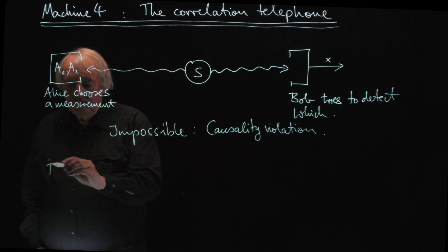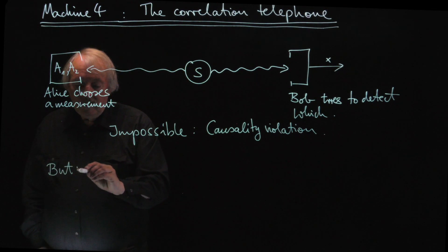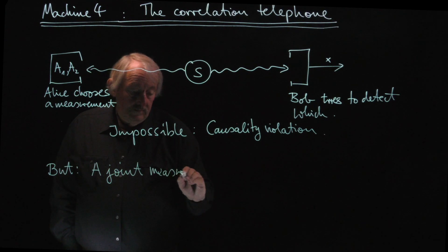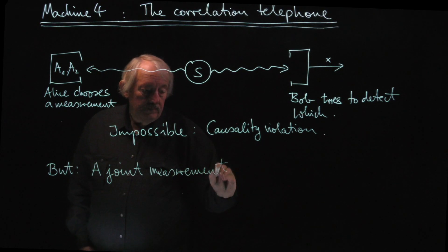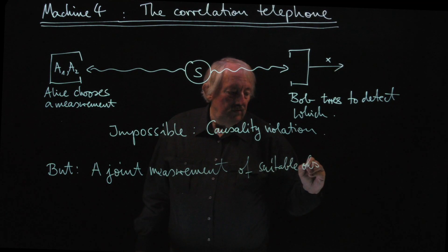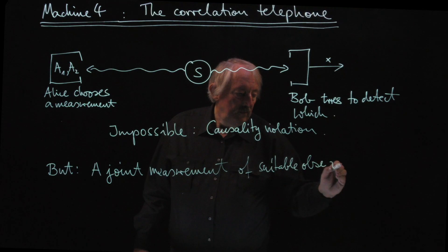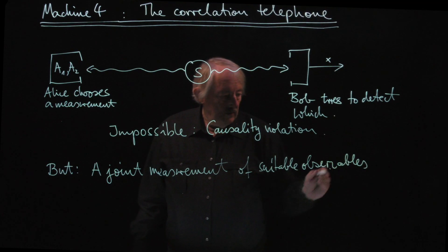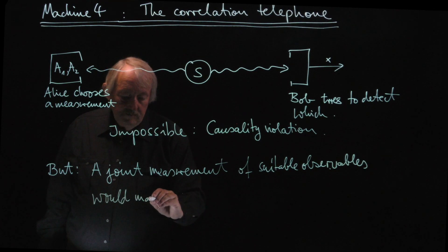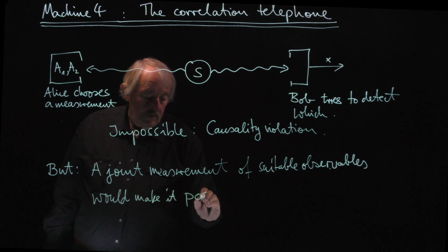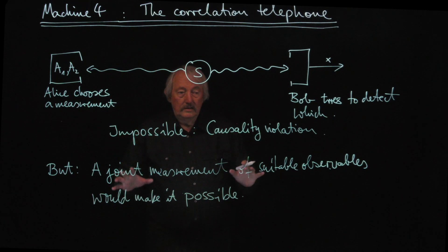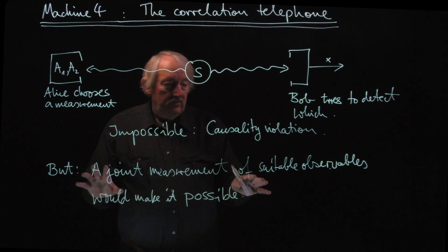Joint measurement of suitable observables would make it possible. I have to argue for that. I'll show you that in detail and how to set it up, of course. But just for the logical structure of it, if I can show this, that if I have a joint measurement device for observables in a certain experiment,